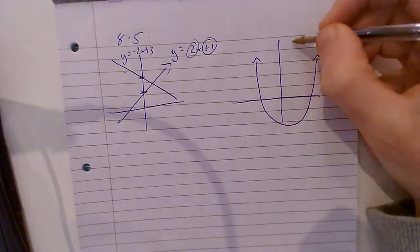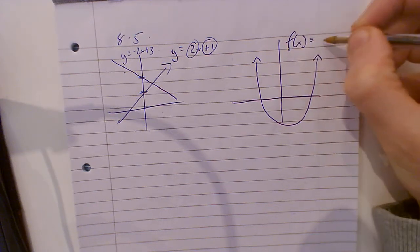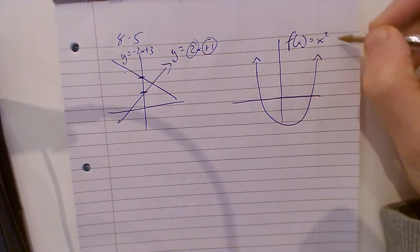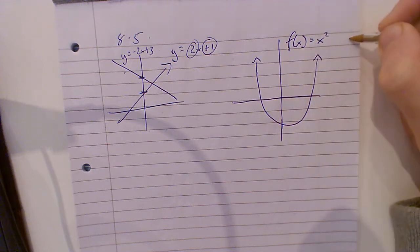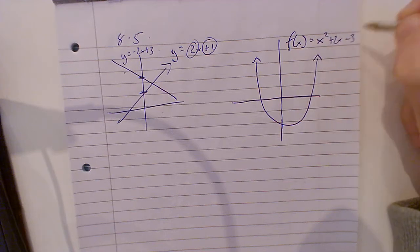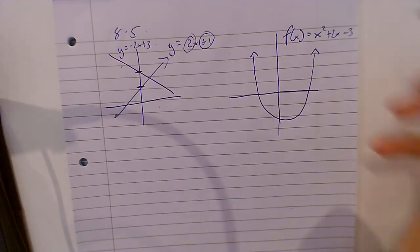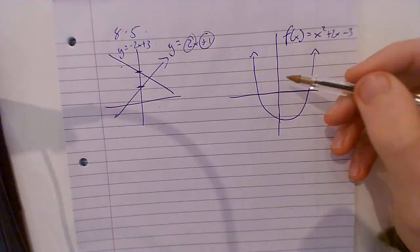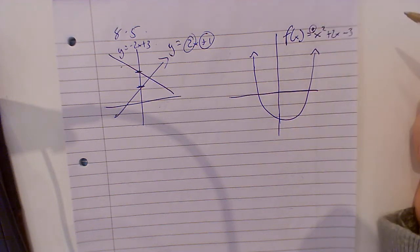Next one. If I've got f of x, I'll make a guess — this would be x squared, and then the end would be something like minus 3 plus 2x. Something like that. Now, how do I know it's this shape and not an n-shape? Because this is plus right here.